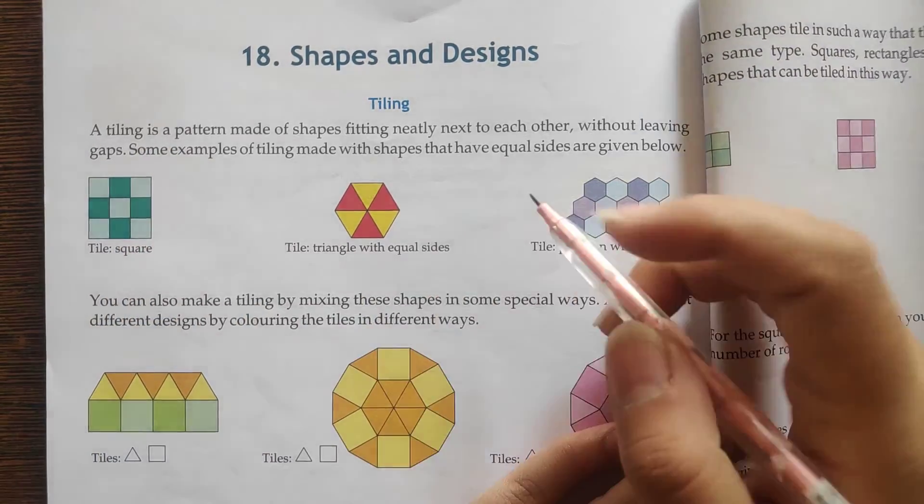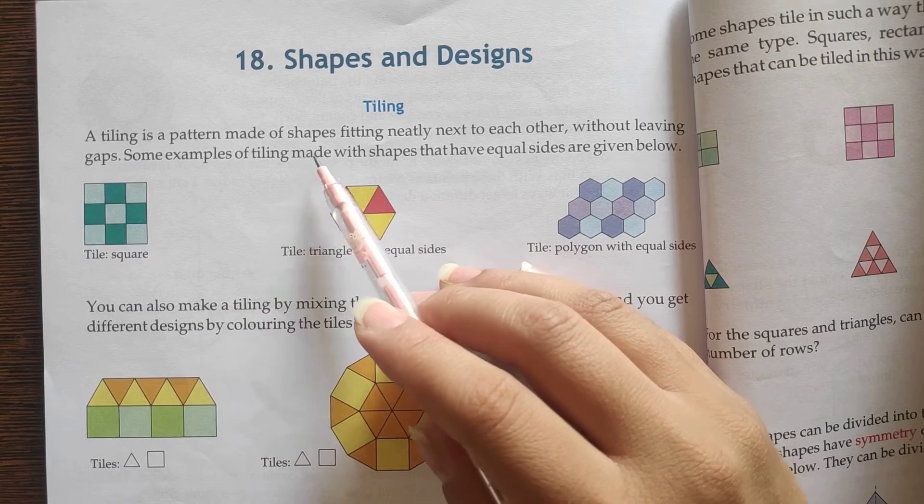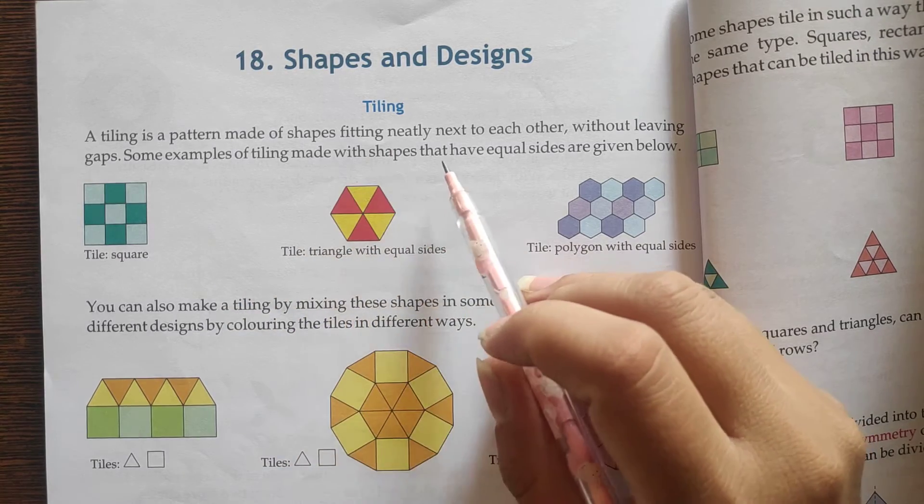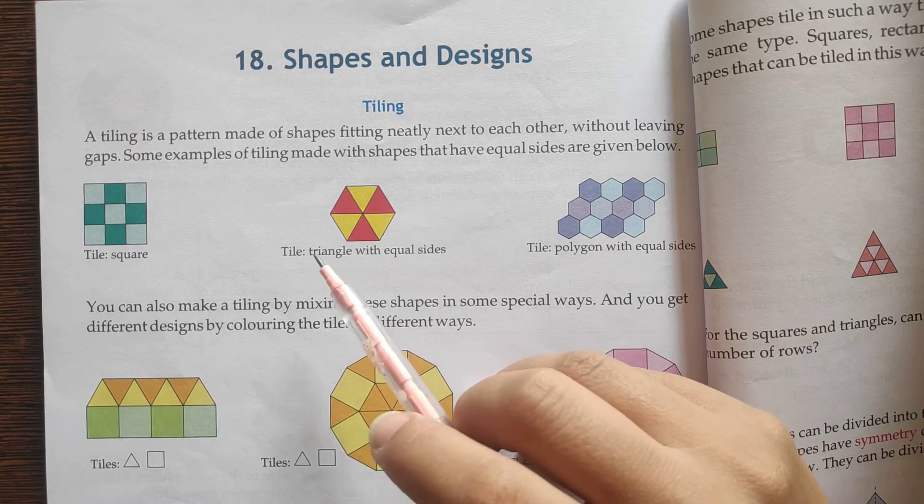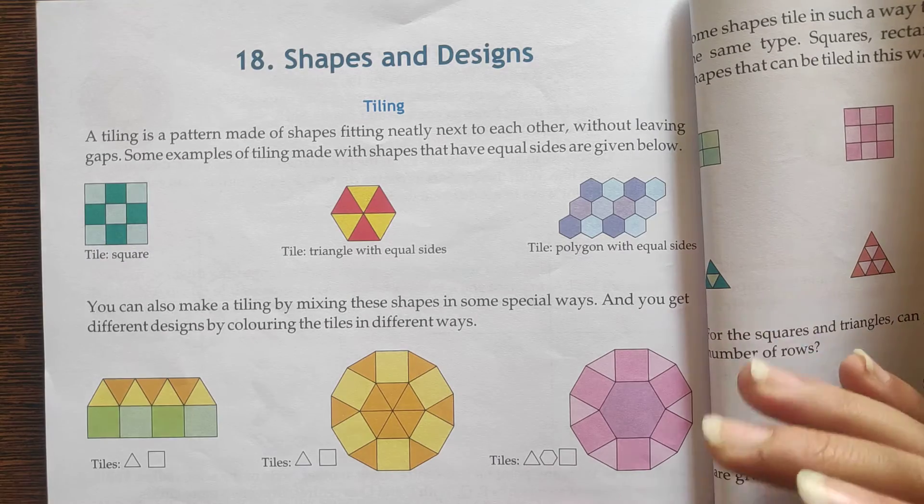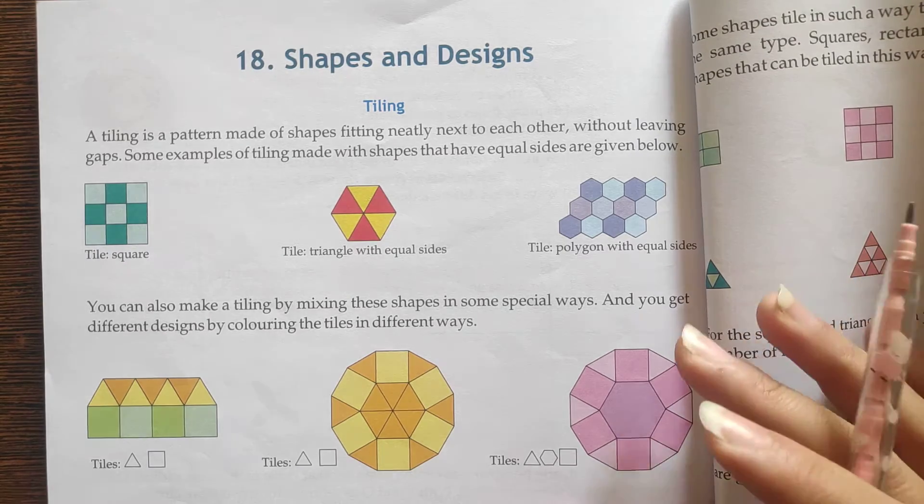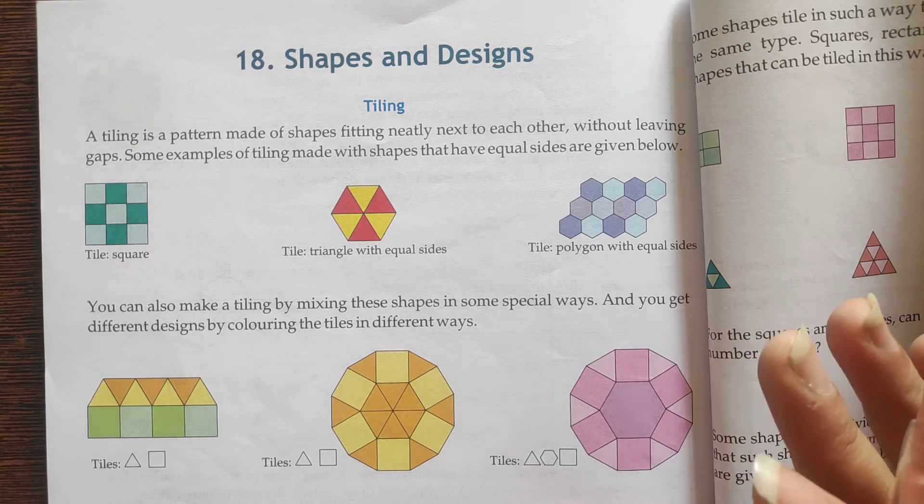And the first topic is Tiling. A tiling is a pattern made of shapes fitting neatly next to each other without leaving gaps. Students, tiling is a pattern made of shapes fitting neatly next to each other without leaving gaps.